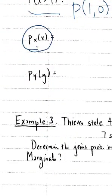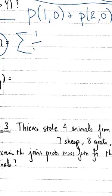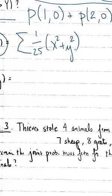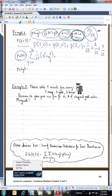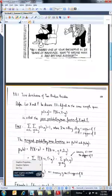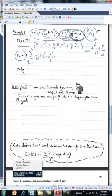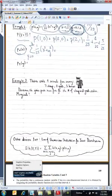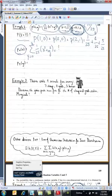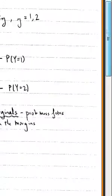P of x is the marginal function of x and I find that by summing my joint distribution over my y's. So my joint distribution is this, and I'm going to sum that from y equals 0 to 2.